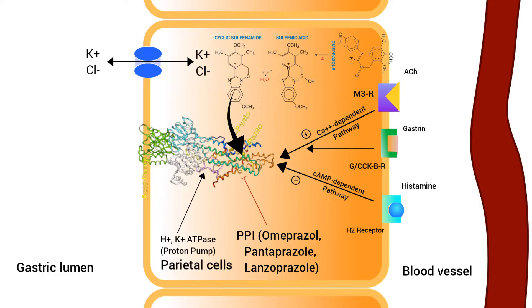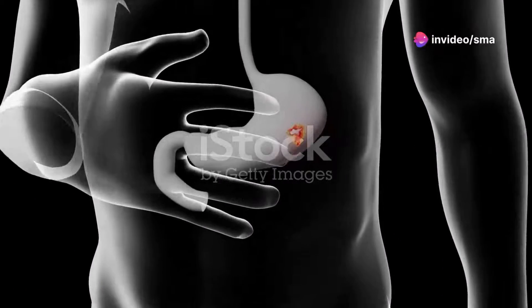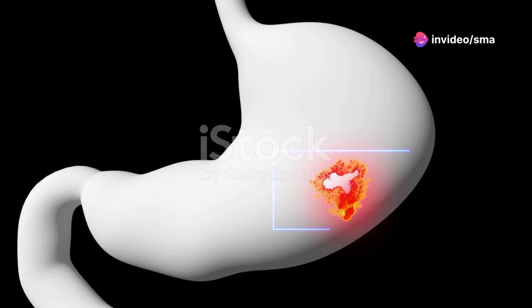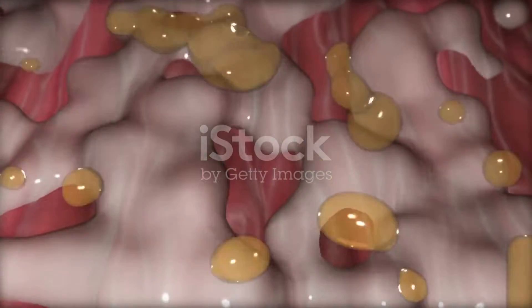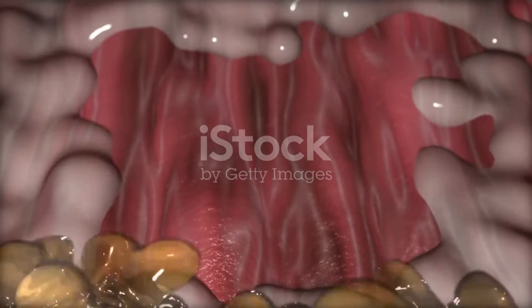By doing this, PPIs prevent the final step in acid production, effectively reducing the overall secretion of gastric acid. This reduction can provide significant relief for individuals suffering from acid-related conditions. This mechanism makes proton pump inhibitors highly effective for treating conditions like gastroesophageal reflux disease, peptic ulcers, and other acid-related disorders. These conditions can be quite debilitating, and PPIs offer a reliable solution.